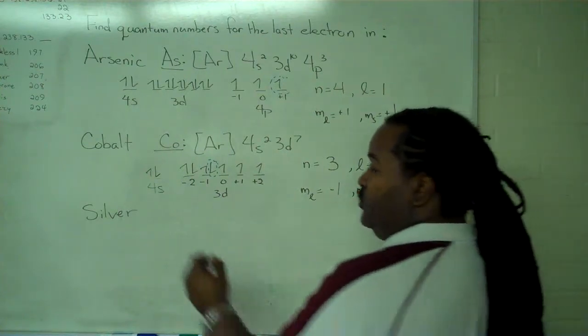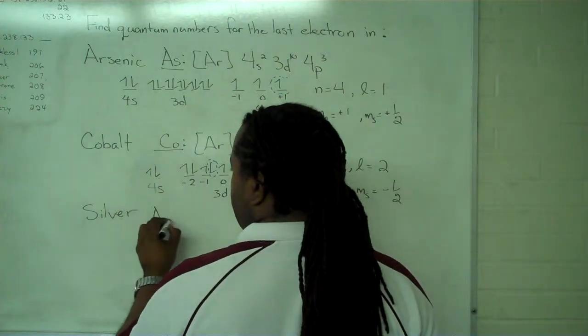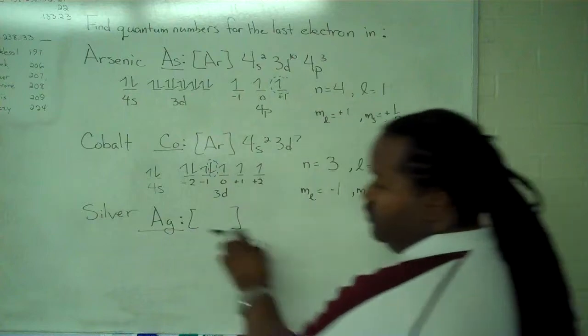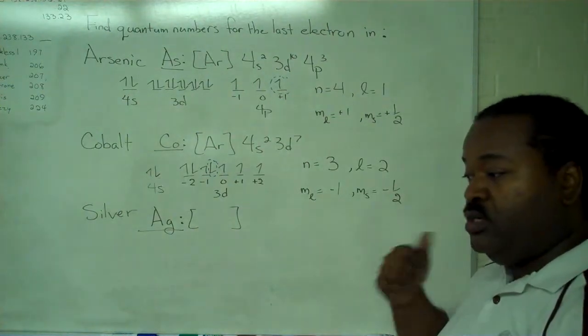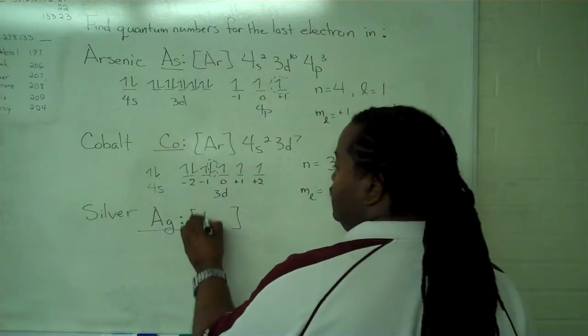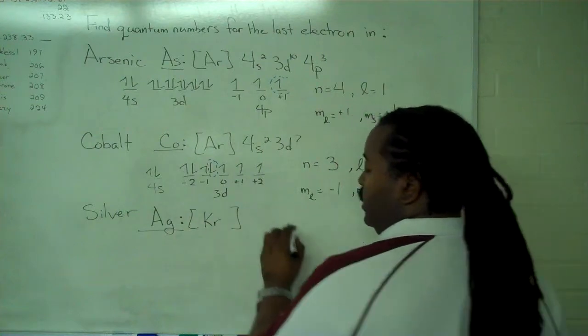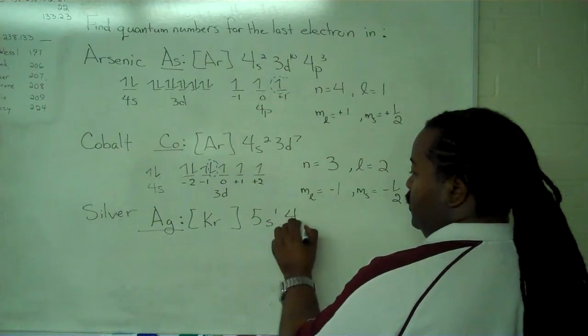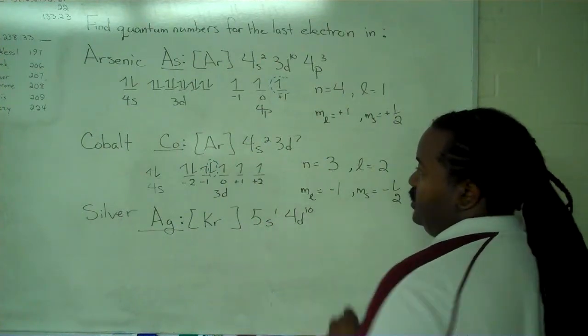So, our last one is silver. So, we need the noble gas core to start off our electron configuration. And the rest of the configuration, 5s1, 4d10.